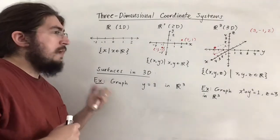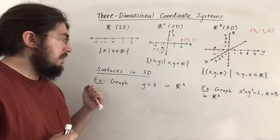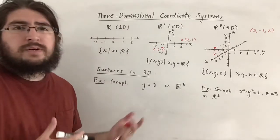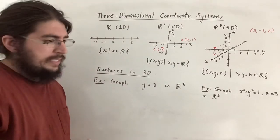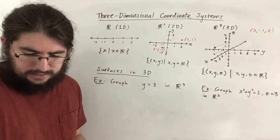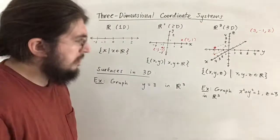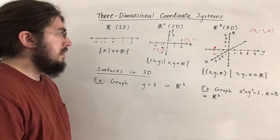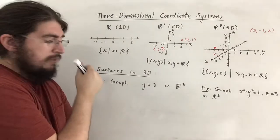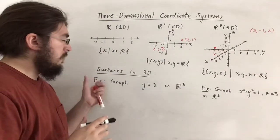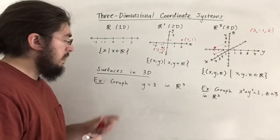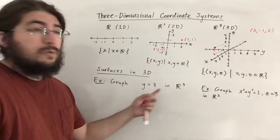Now what we're going to try to do is graph some surfaces in three dimensions. After doing this I'll describe distances — and midpoints, which aren't too hard but we'll focus more on distances. For right now let's focus on these examples. Here we're asked to graph y equals 3 in R³.